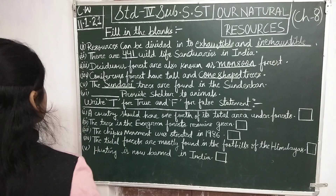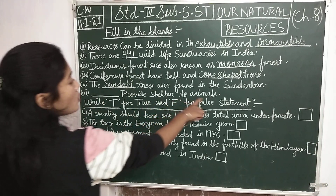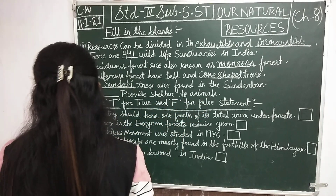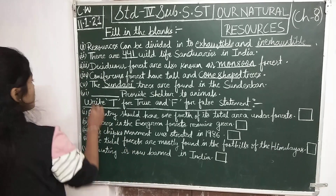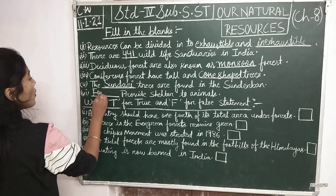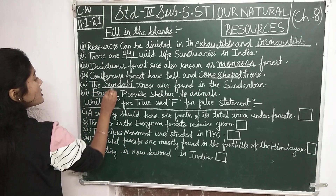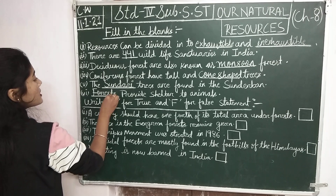Number 6: forests provide shelter to animals. Forests is spelled F-O-R-E-S-T-S.